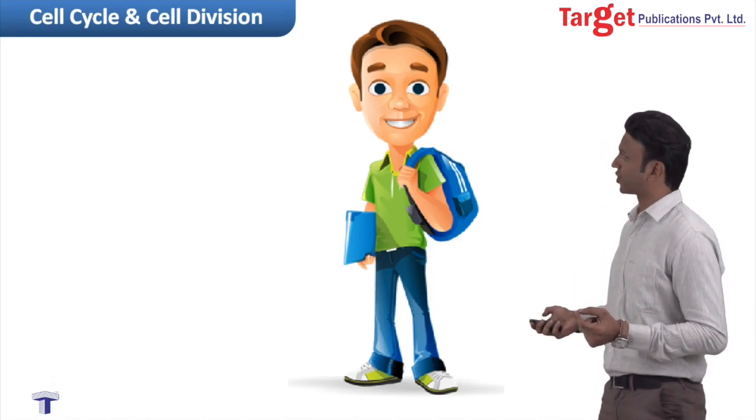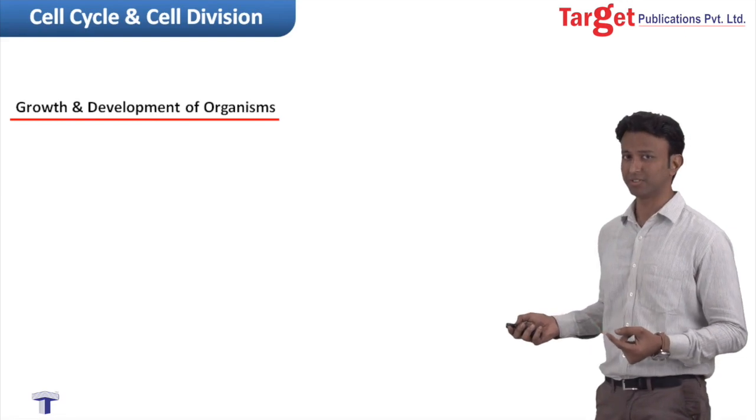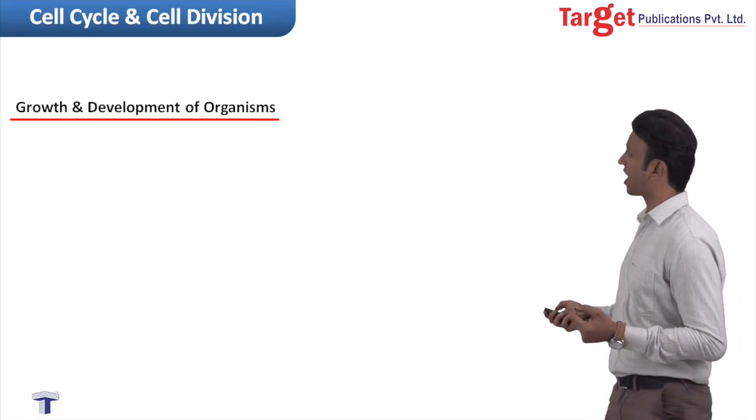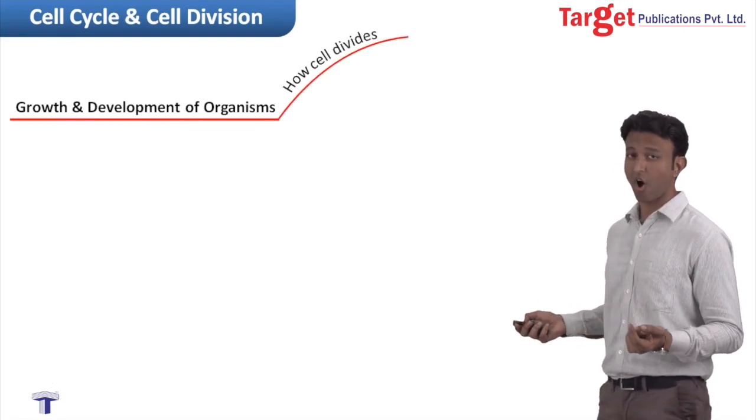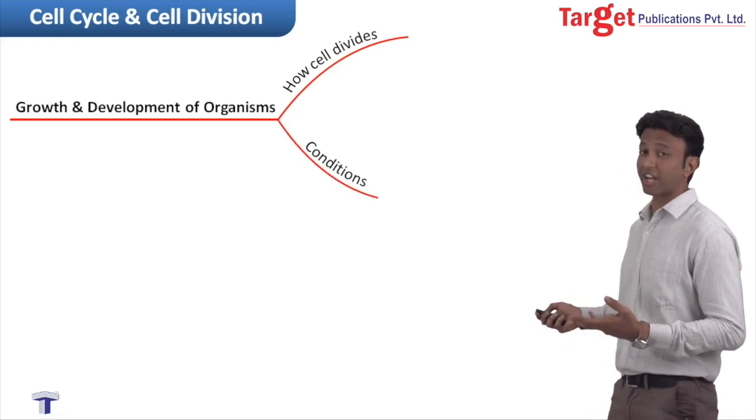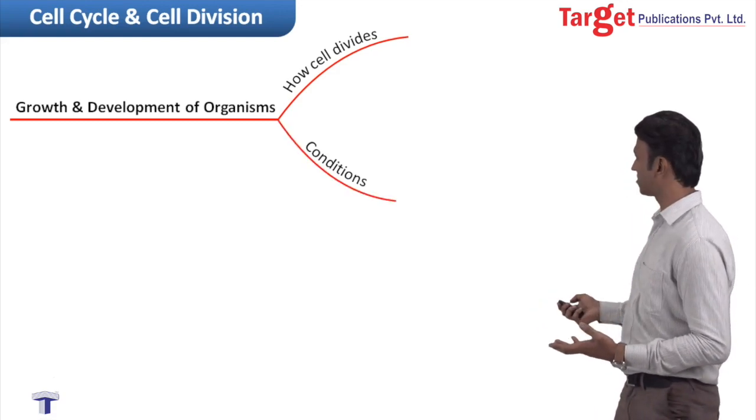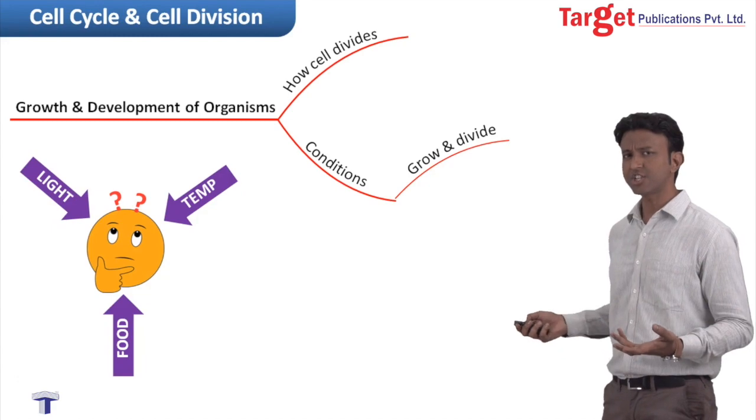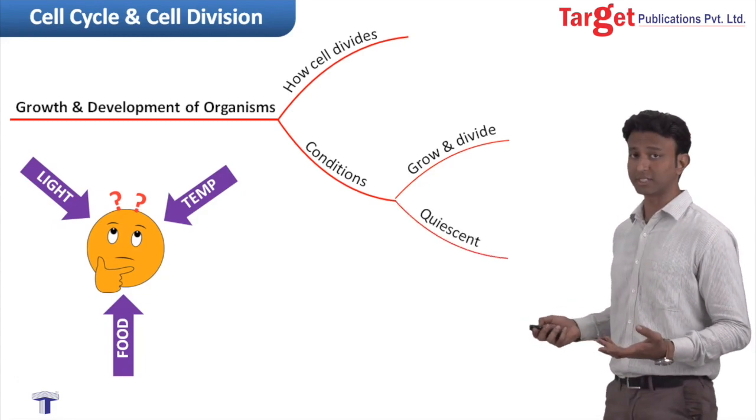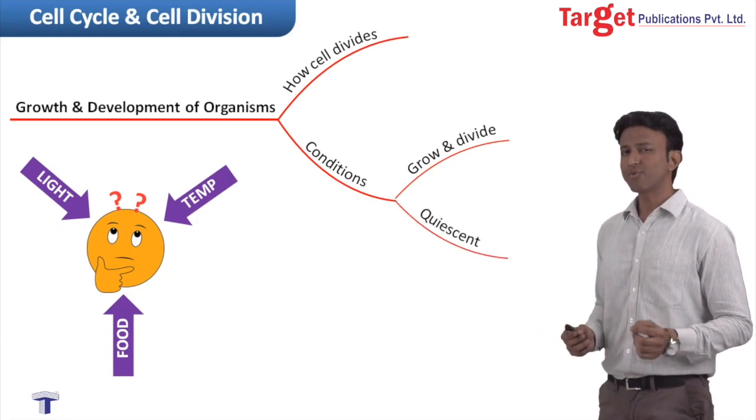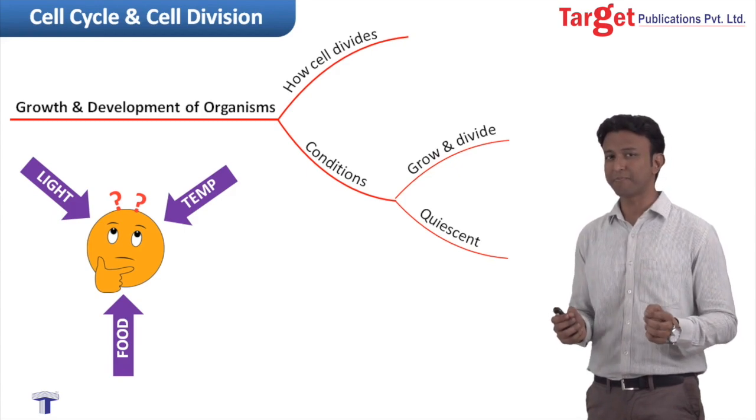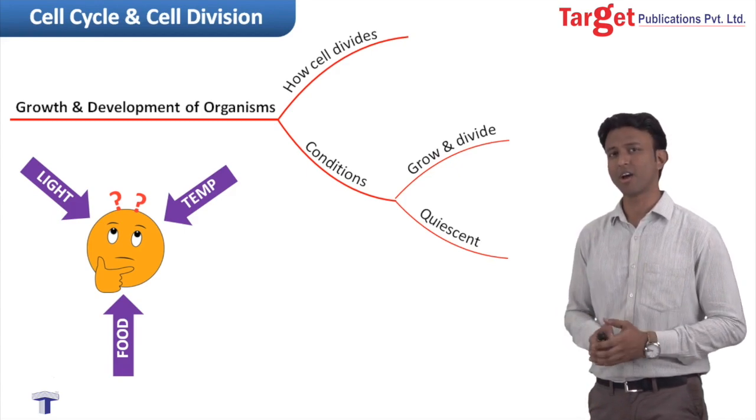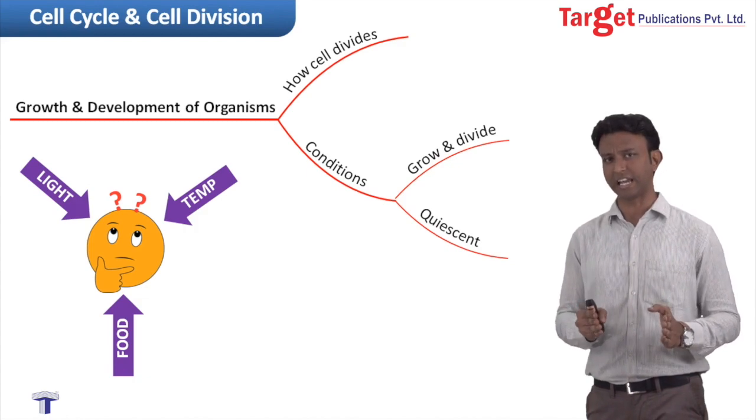So if we were to understand the growth and development of organisms, then we need to study how cell divides or what are the conditions that are required to trigger cell division or what other conditions are required to rather make them quiescent or silent. So at least now we understand why is it important to study cell division.